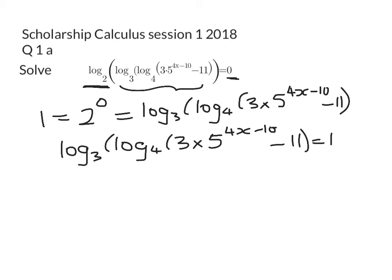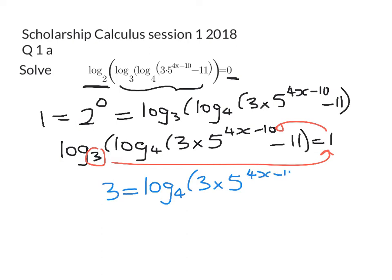So we now do the same thing again. We've got 3 to the power of 1 is equal to all of the stuff in the brackets. So that gives me 3 is equal to log to base 4 of 3 times 5 to the power of 4x minus 10, take away 11.